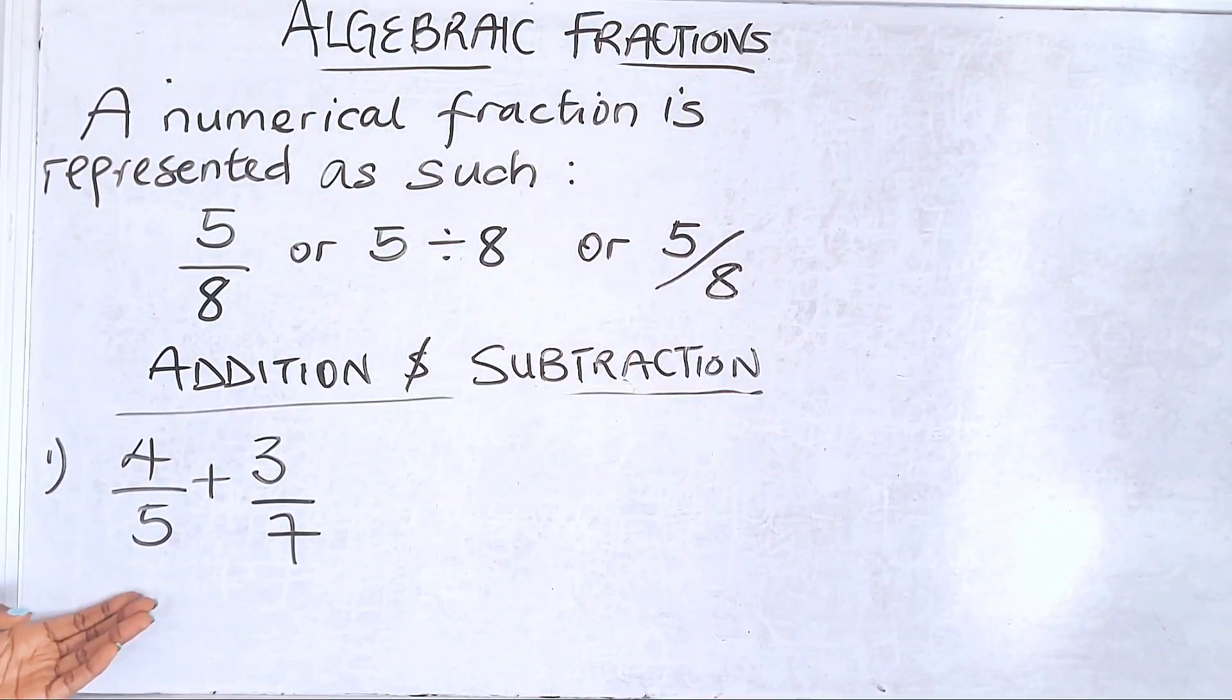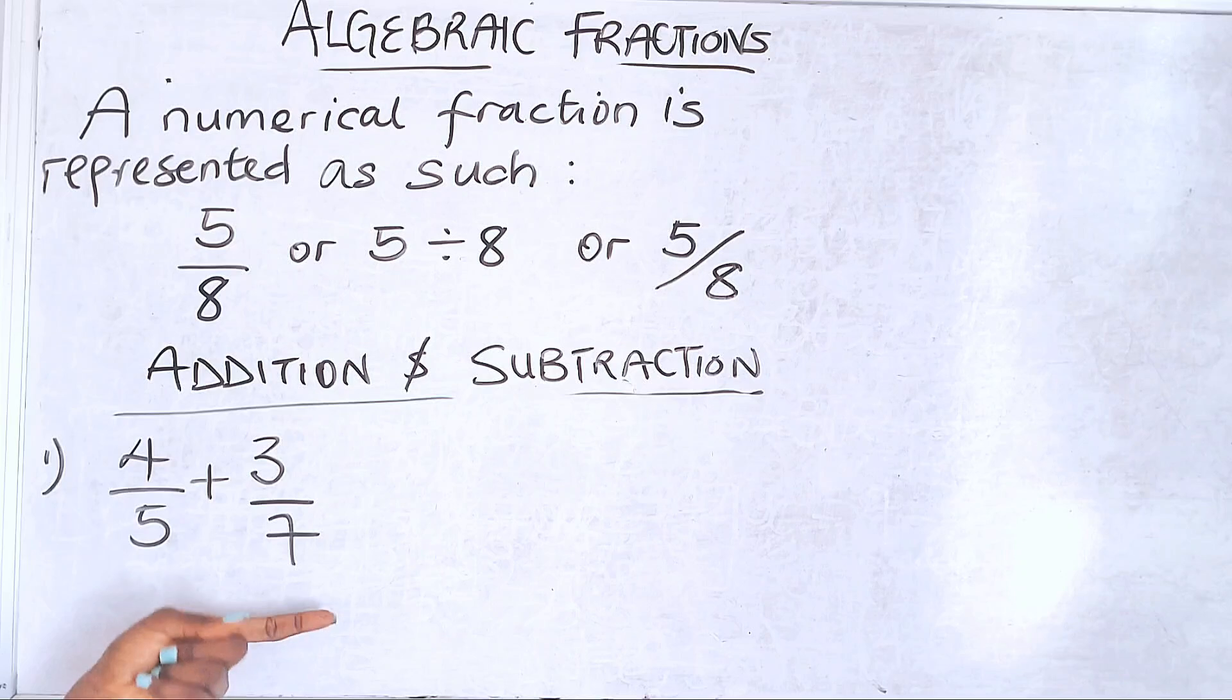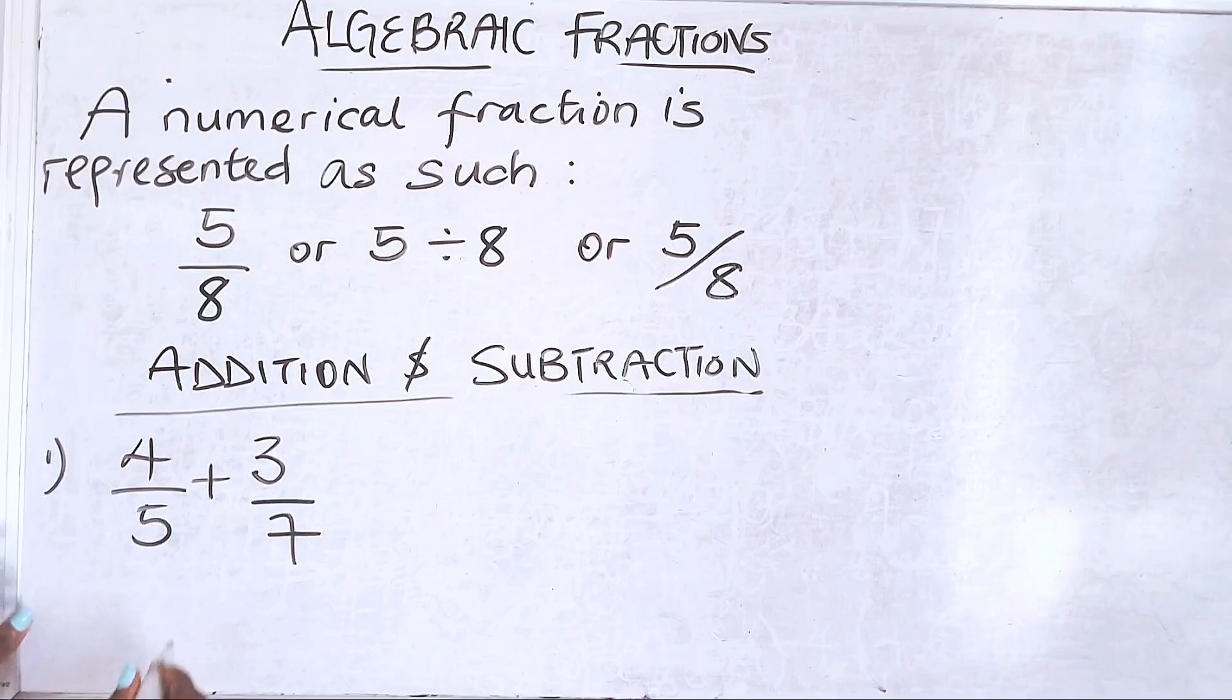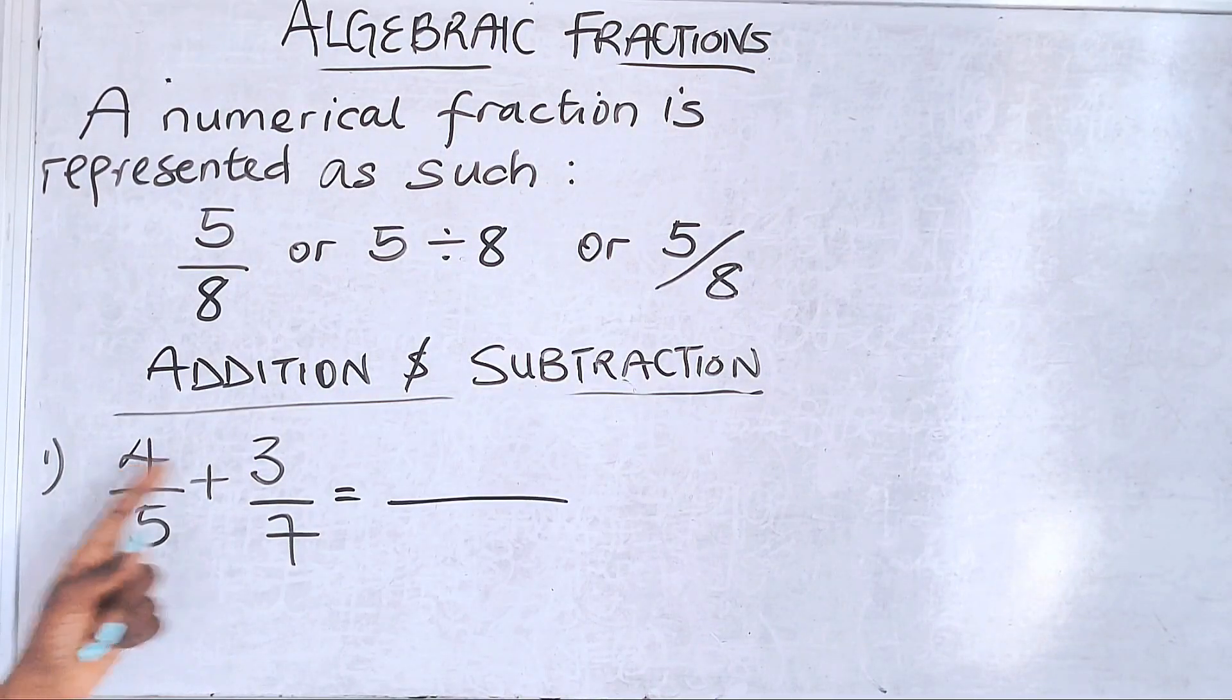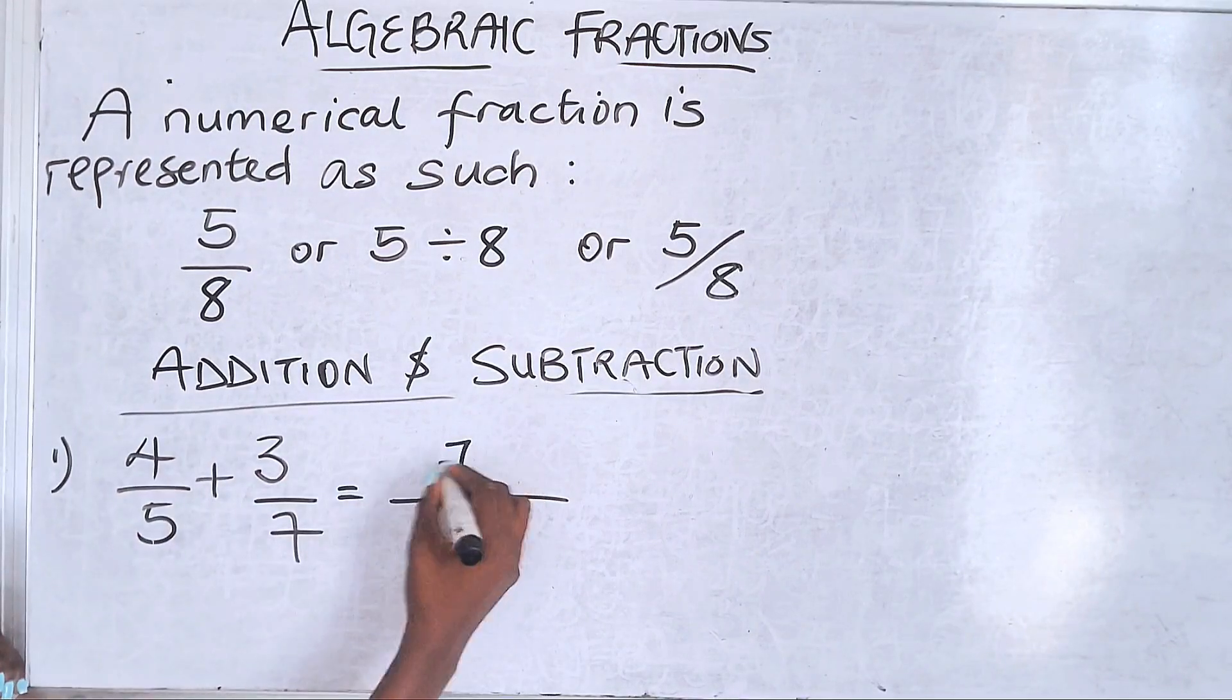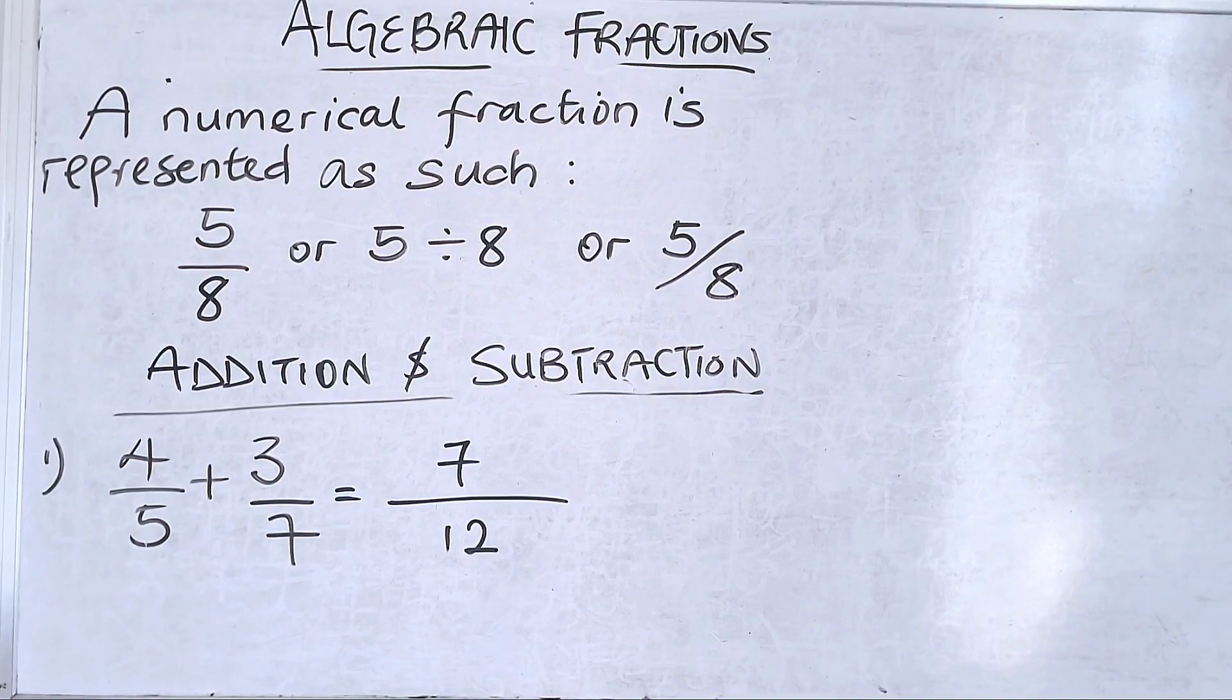Given a case like this, you have your numerator and denominator added to another numerator and denominator. What you want to take note of first is your denominator. In this case, 5 and 7. Please take note: people always do 4 plus 3 over 5 plus 7 equals 7 over 12, which is not correct. This is not the right way to add your fractions.